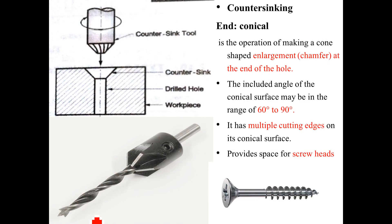The next operation is counter sinking, which has a similar function to counter boring. However, instead of a flat end, here the cutting tool has a conical shape. The counter sink tool provides a conical recess so that screw heads with conical faces can sit flush inside the workpiece. The operation of making a cone-shaped enlarged end to accommodate a screw's conical face inside the workpiece is called counter sinking. The conical end provides the recess for screws.